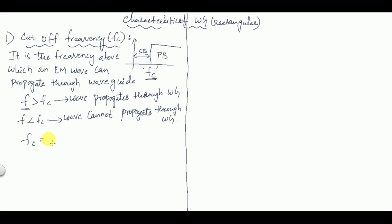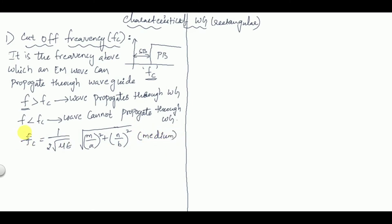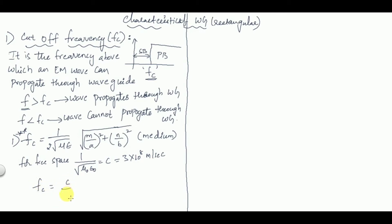The formula for cutoff frequency is: fc = (1 / 2√(με)) × √((m/a)² + (n/b)²), valid for any medium. For free space, where μ = μ₀ and ε = ε₀, we have 1/√(μ₀ε₀) = c = 3×10⁸ m/s. So the cutoff frequency in free space becomes: fc = (c/2) × √((m/a)² + (n/b)²) Hz.